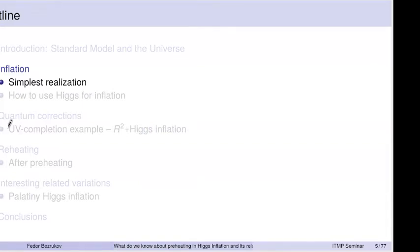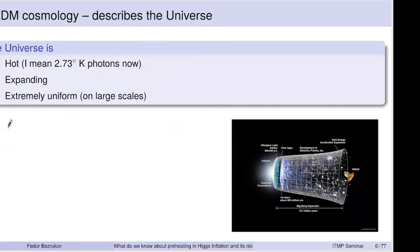I was asked to give a more general introduction to inflation. Let's turn to what we know about the universe. Notice that in my list of unexplained things — dark matter, baryon asymmetry, and inflation — the majority are cosmological observations. What do we know about the universe? We know it is hot: 2.73 Kelvin photons around, not too hot but thermal. It's expanding, and on large scales it's pretty uniform.